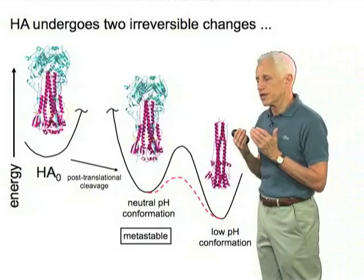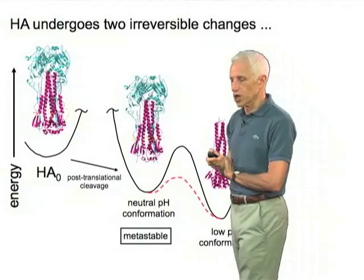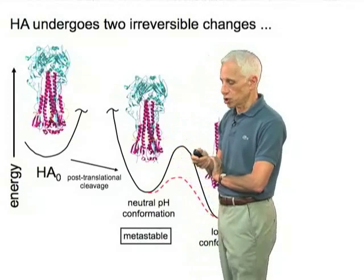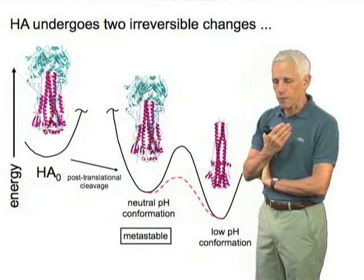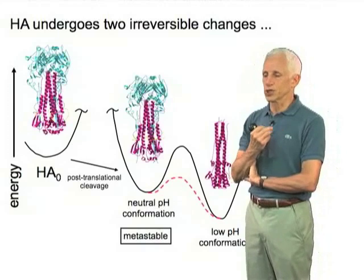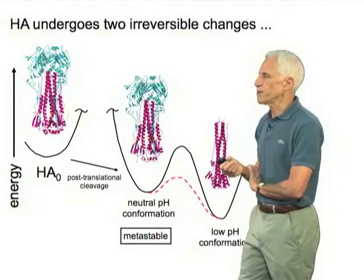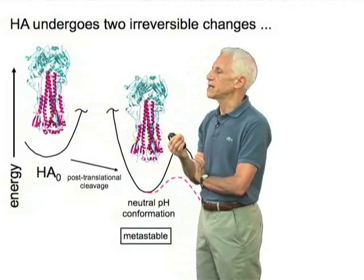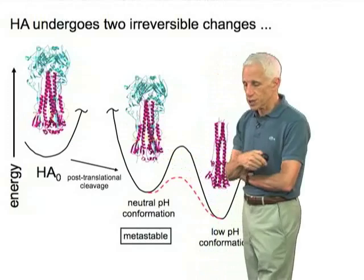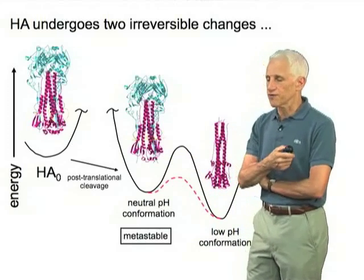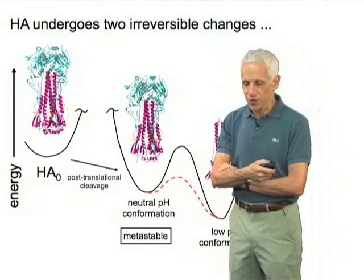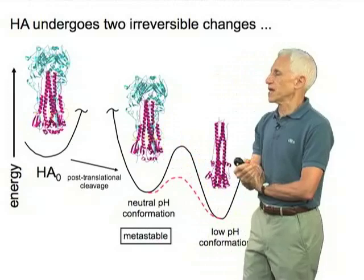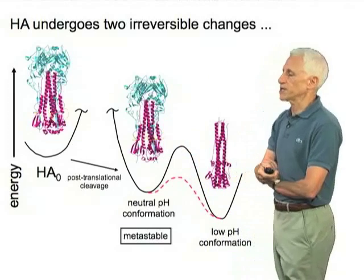The hemagglutinin undergoes two irreversible changes in the course of its maturation and exposure to low pH, because the conformational change just shown is irreversible. If you then neutralize, you don't go backwards. That's because of the first irreversible change, which is the cleavage of a peptide bond. The structure we see is very stable if you keep it at pH 7 — soluble flu hemagglutinin can hang around for months or years stably in the laboratory — but if you expose it to low pH, very rapidly it rearranges as shown, and that rearrangement doesn't go backwards.